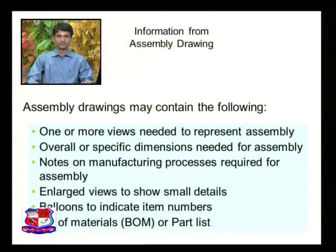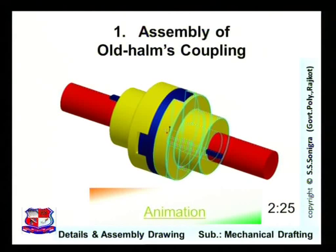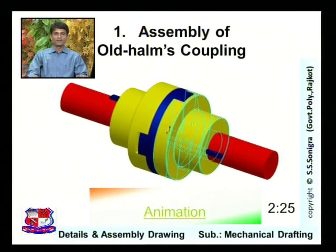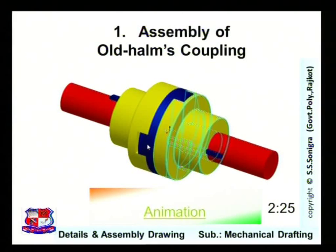This is an assembly drawing of Oldham's coupling, shown in isometric view. Oldham's coupling is used to connect two shafts in which axial movement may be needed, providing axial flexibility. We will now see how this assembly works and how to draw the detail drawing and assembly drawing of this Oldham's coupling — first through an animation showing how it works.